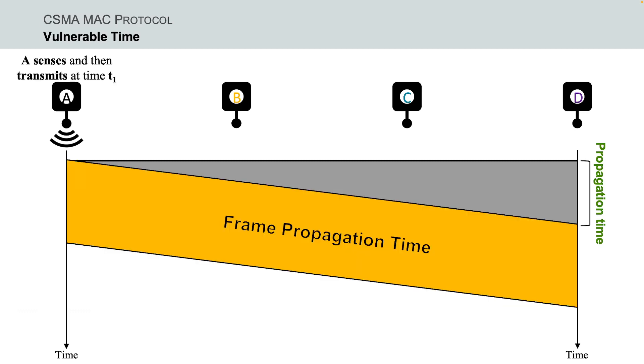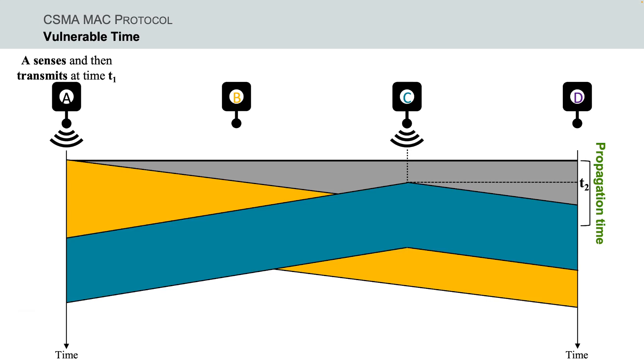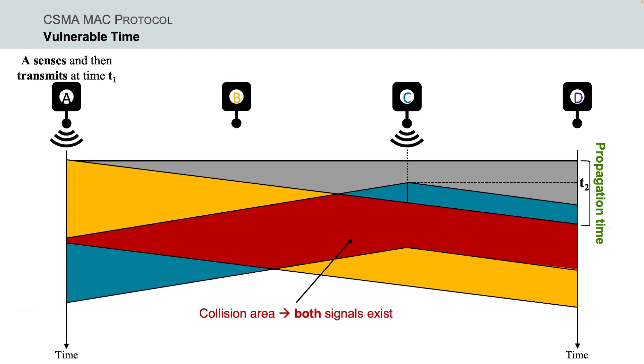In this example, when node A transmits a frame, and if any other node tries to send a frame during this time, then the two signals will collide and consequently a collision will result.